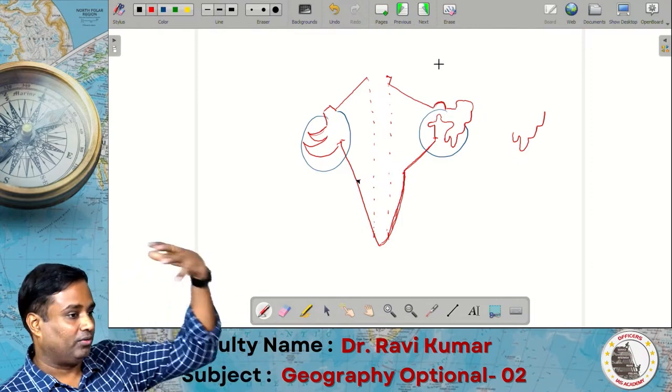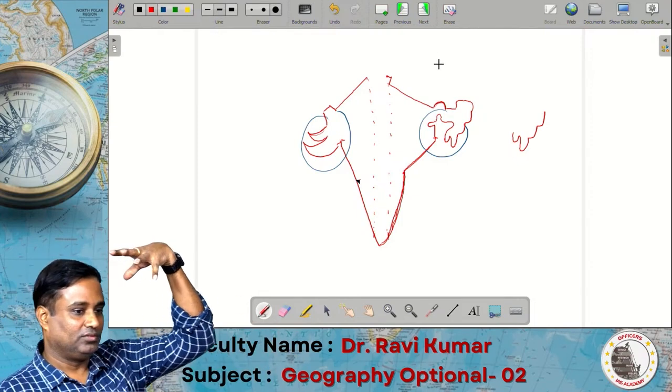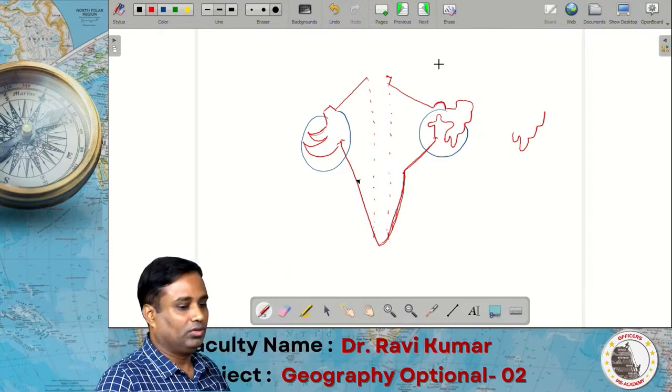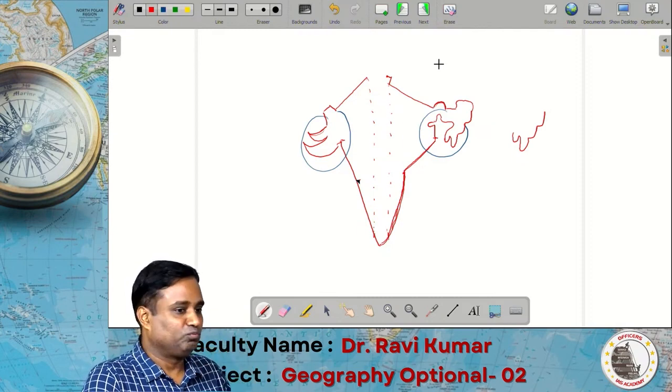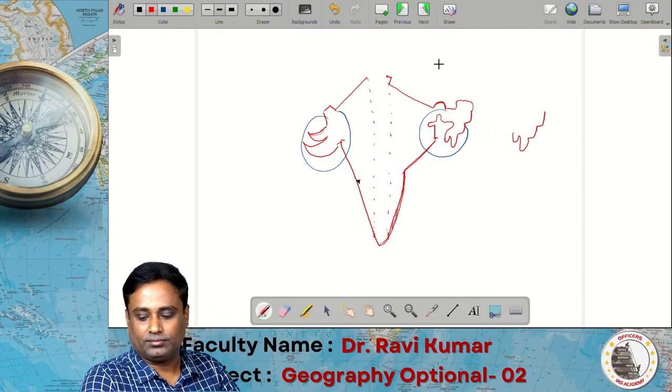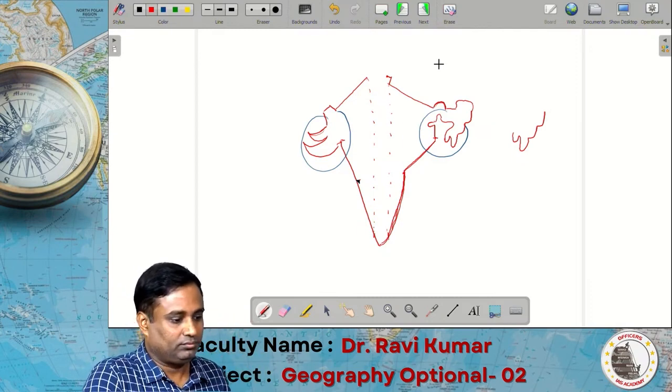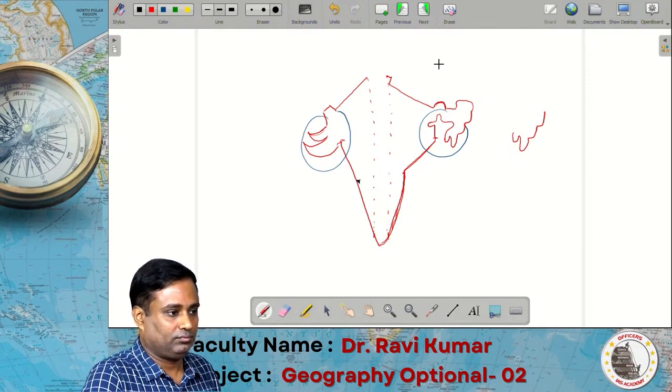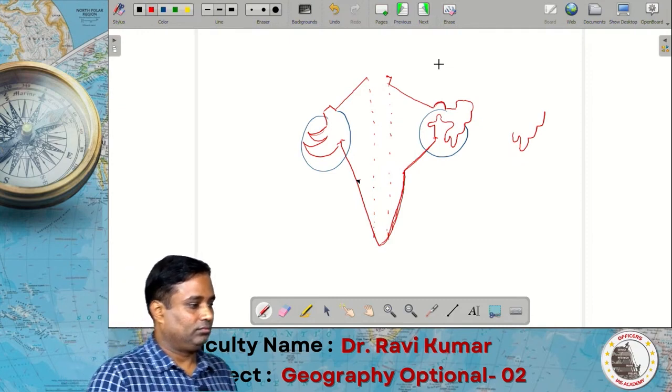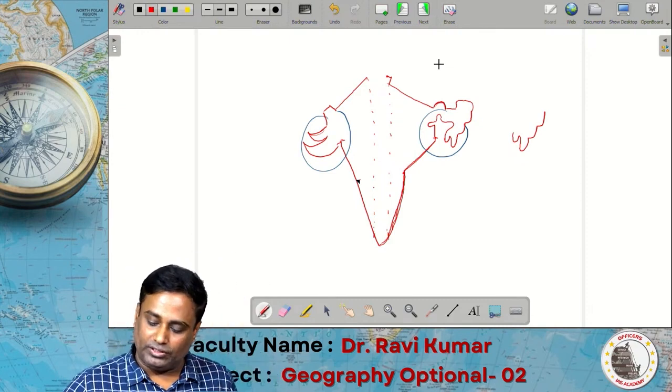Now we have only one left. What is it? Jammu & Kashmir. The head. So, for the head we have to draw 3-3's.